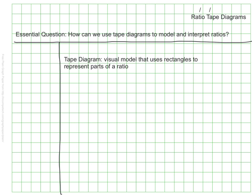Before we look at some tape diagrams we just want to make sure we know what a tape diagram is. A tape diagram is a visual model and it uses rectangles to represent the parts of a ratio.